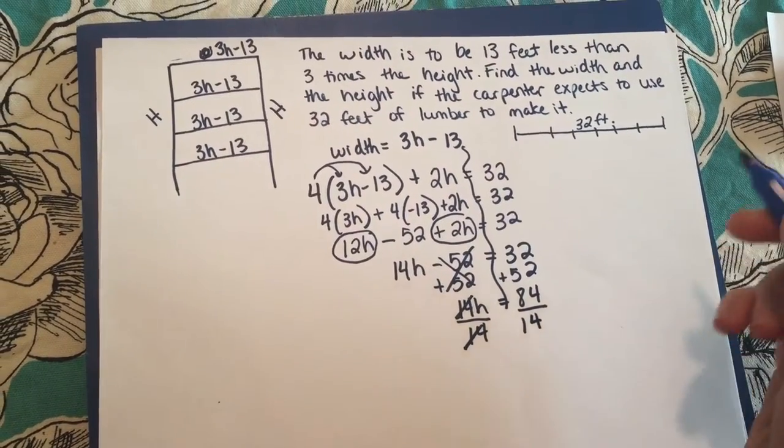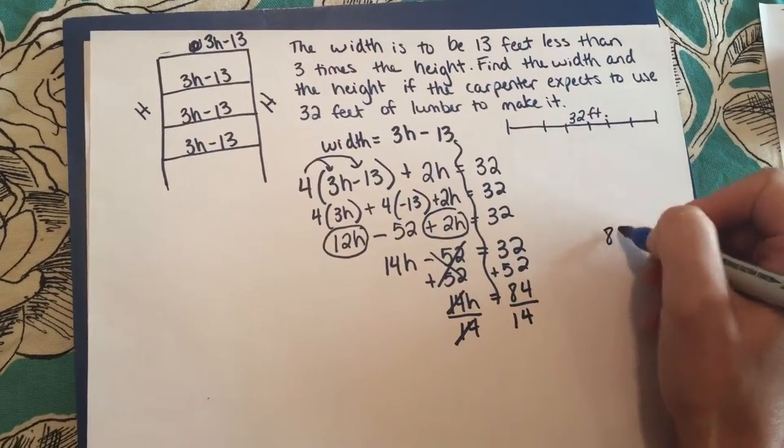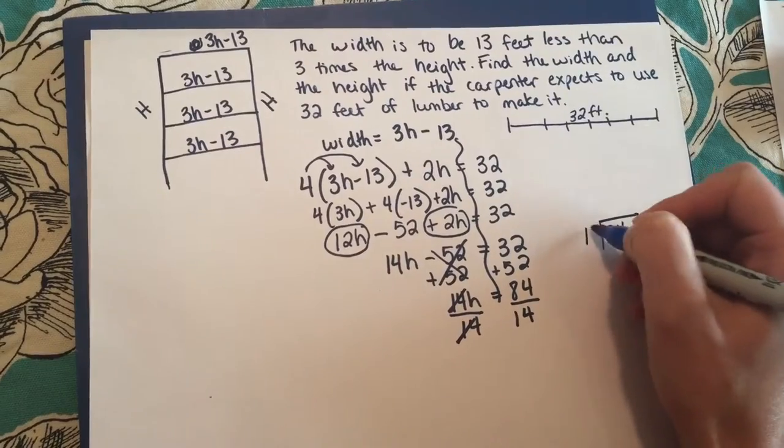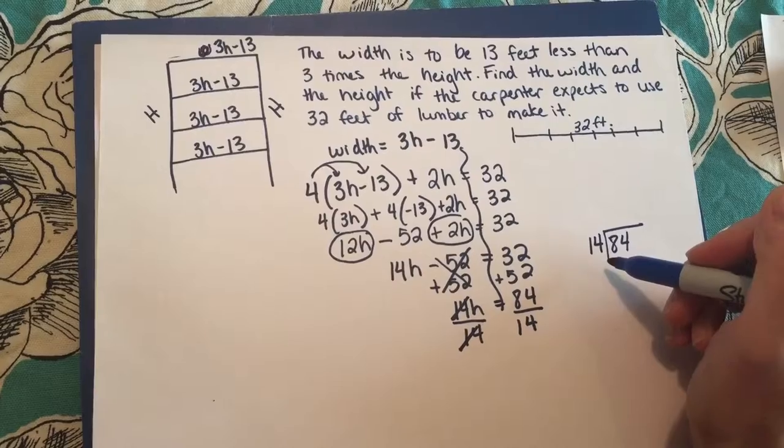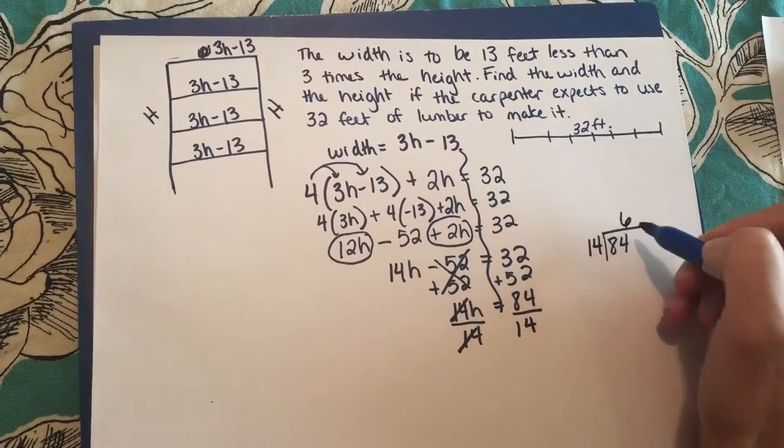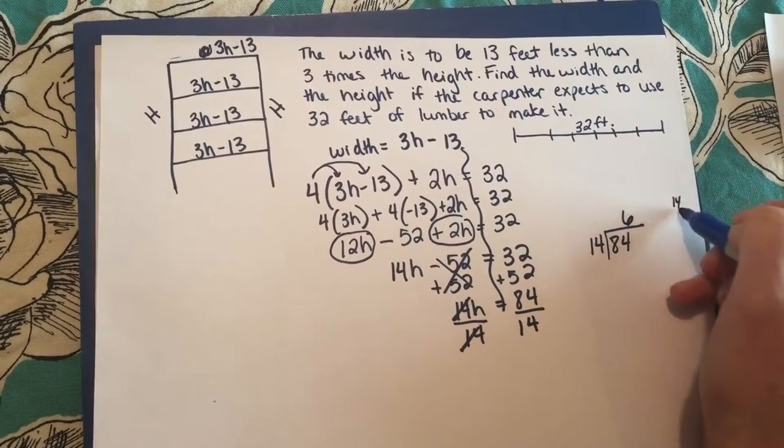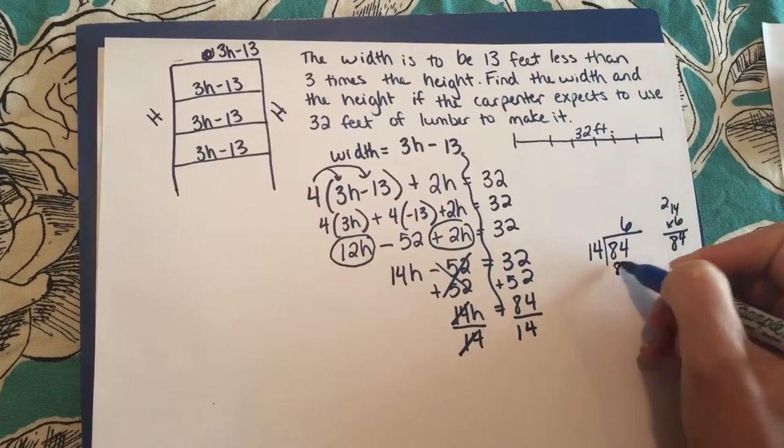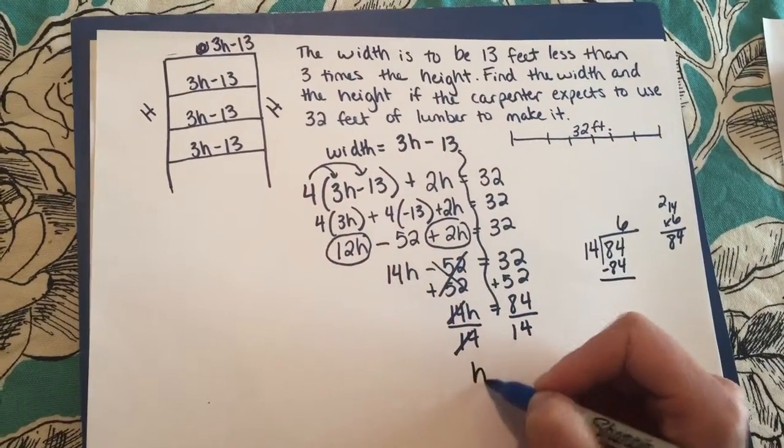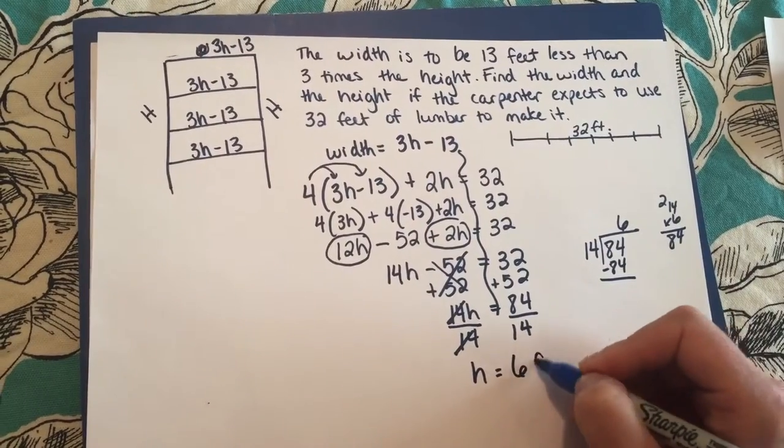84 divided by 14, let's see if it goes in. I'm going to try 14 times maybe 6. Oh yeah, 14 times 6, what do you know, it's 84, perfect. So the height is going to be 6 feet.